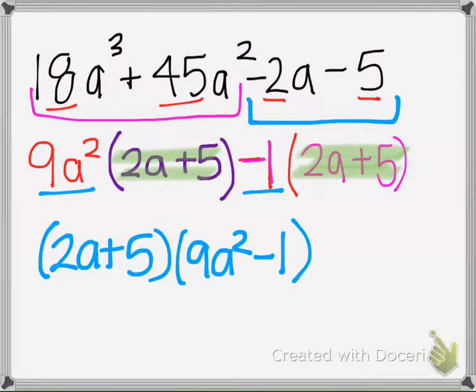Next thing as we look here, this is a binomial, so we need to use our rules for binomials. We need to look for the difference of 2 squares or the sum or difference of 2 cubes, which there is none for 2A plus 5.